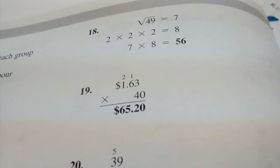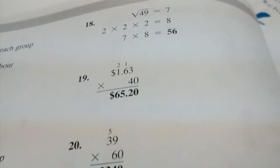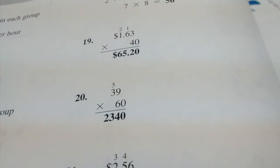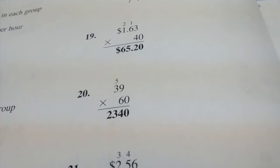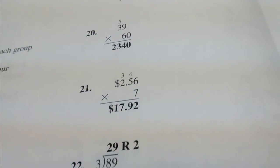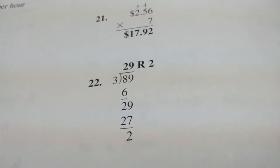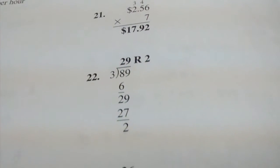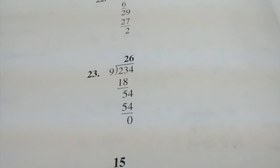Number 19, $65.20. Number 20, $2,340. Number 21, $17.92. Number 22, 29 remainder 2. Number 23, 26.